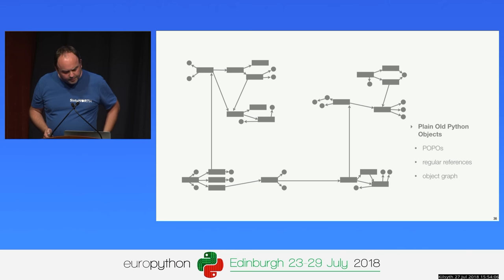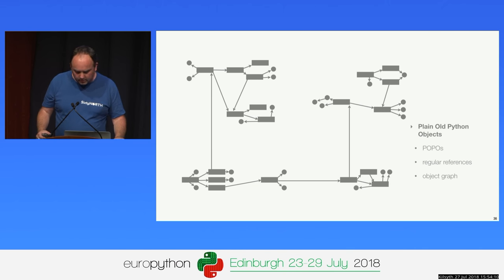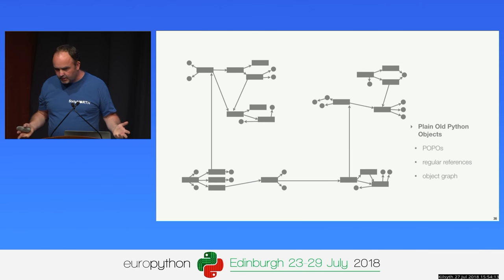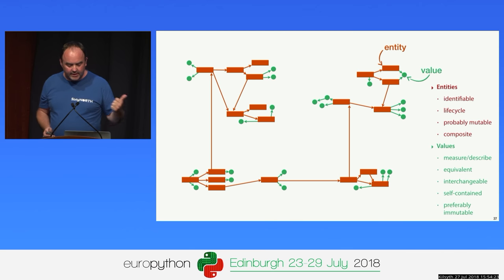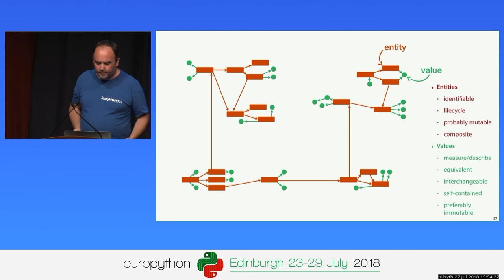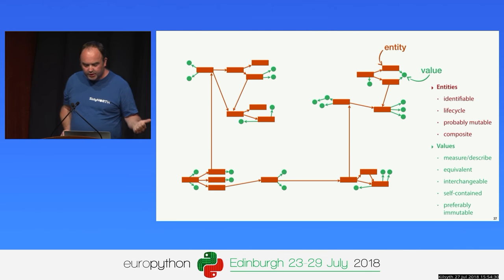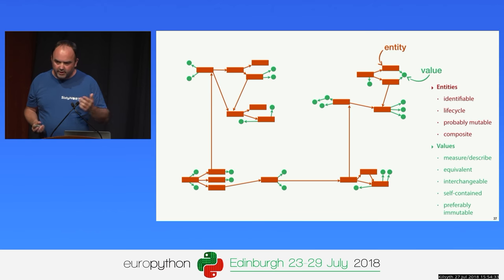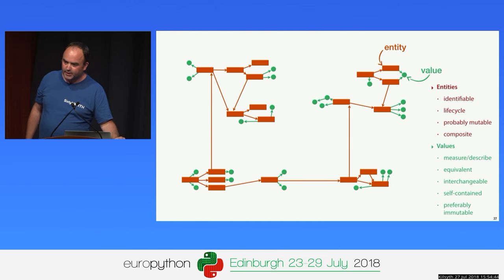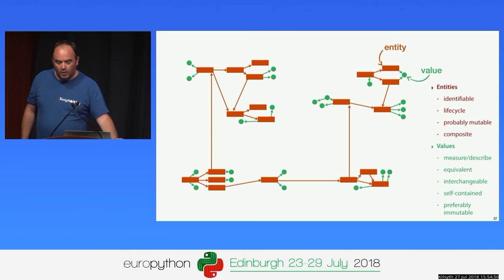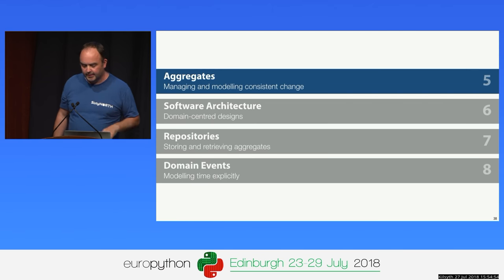At the most basic level, domain models are constructed from graphs of entities, which own value objects. The immutable value objects may be shared. Entities are identifiable, have a life cycle, are probably mutable, and are composite. Value objects measure and describe quantities — they're equivalent, interchangeable, self-contained, and preferably immutable. Almost any Python system, whether built using DDD or not, will involve a domain model something like this. What DDD brings really is what happens next when we get to aggregates.